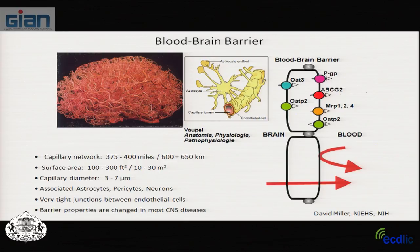The human brain has an estimated 375–400 miles of capillary network. At the blood-brain barrier, endothelial cells form tight junctions with astrocytes. Multiple ABC transporters are expressed on the luminal (apical) surface of endothelial cells, pumping drugs out of the brain. The capillary system of rat brain has been used to study this, with an expanded model showing the interactions between endothelial cells and astrocytes.